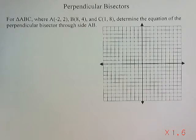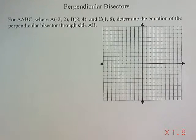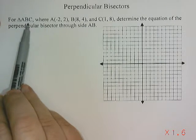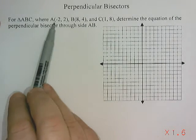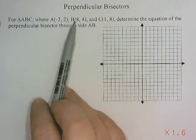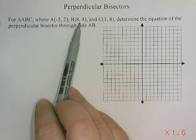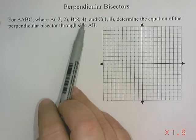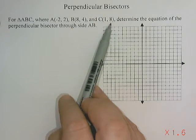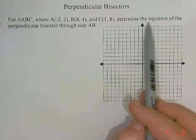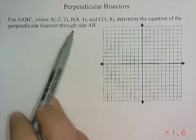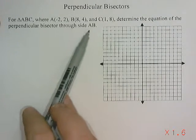Perpendicular bisectors. Our question says, for triangle ABC, where A is the point negative 2 and 2, B is the point 8 and 4, and C is the point 1 and 8, determine the equation of the perpendicular bisector through side AB.